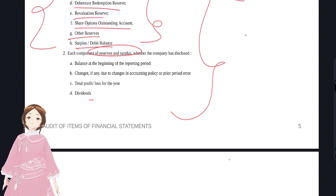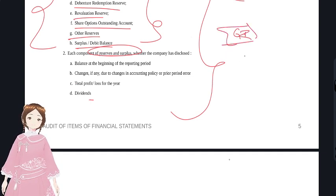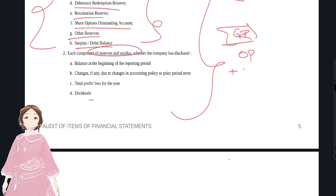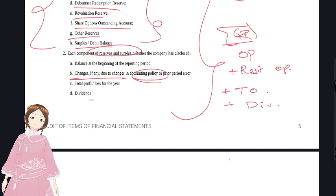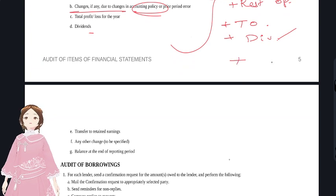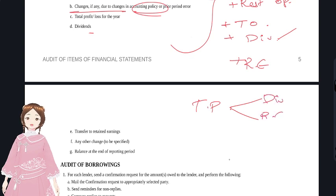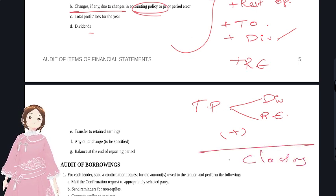Disclosures for reserves and surplus per Schedule 3 include: capital reserves, capital redemption reserve, securities premium, debenture redemption reserve, revaluation reserve, share options outstanding account, and surplus or deficit balance as per P&L account. The best way to remember these is from FR consolidation problems. Each reserve component shows opening balance, restated opening balance for errors or accounting policy changes, movements during the year, and closing balance.